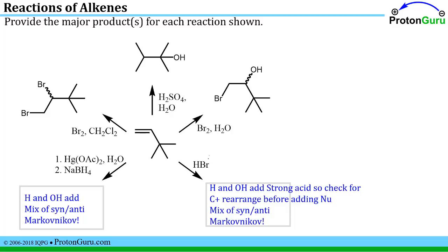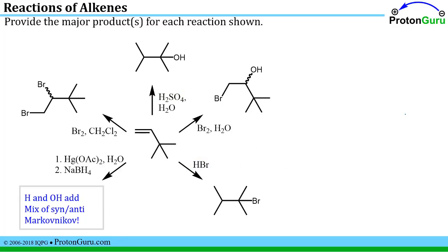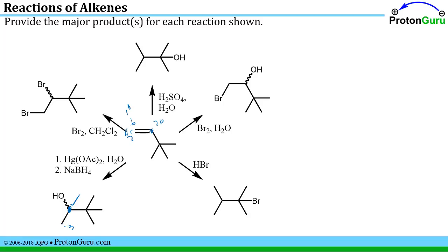Continuing around the circle: HBr is a strong acid. We already analyzed this scenario — the secondary carbocation forms, then one methyl group moves over to give a tertiary carbocation. In the previous strong-acid case we added OH there; here our nucleophile is Br⁻, so Br ends up on that carbon instead. The final reaction in the wheel: as soon as you see the mercury, recognize it as oxymercuration-demercuration — OH adds to the more substituted side, H adds to the less substituted. No strong acid, no carbocation, no rearrangement to worry about. We again generate a chiral center, so we get a racemic mixture.